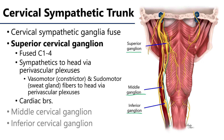This would be contiguous with the thoracic sympathetic side. The superior cervical ganglion represents the fused ganglia of C1 through C4 of the sympathetic trunk. This superior cervical ganglion is the sole provider of sympathetic fibers to the head.